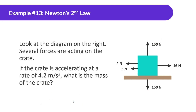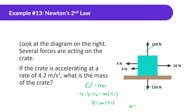Look at the next diagram. Several forces are acting on the crate. If the crate is accelerating at 4.2 meters per second squared, what is the mass? The Y forces cancel. In the X direction: negative 4 minus 3 plus 16 equals mass times 4.2. That gives 9 equals mass times 4.2, so mass equals 9 divided by 4.2, giving 2.14 kilograms.